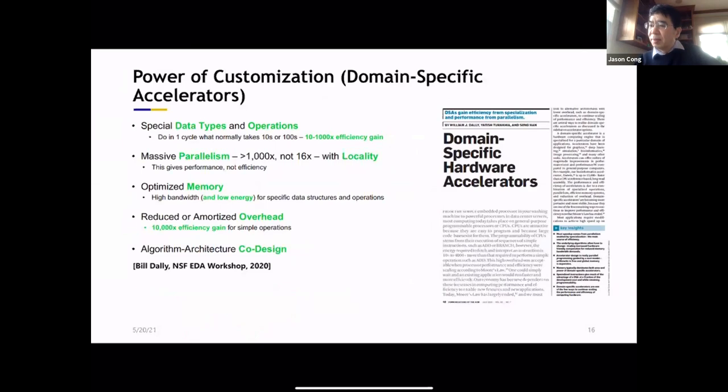So there's other sources of inefficiencies or maybe another way to put it is that the power of customization comes from multiple directions. So there's a nice article about this from Professor Dally's Group at Stanford. Now he's also with NVIDIA. So he summarized nicely into these five parts: specialize the data type and the operations.